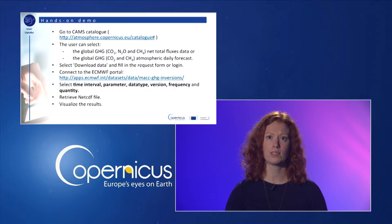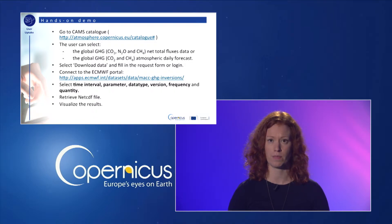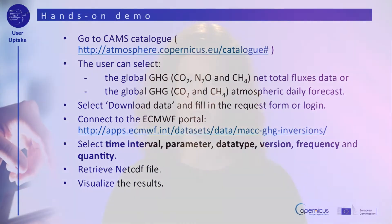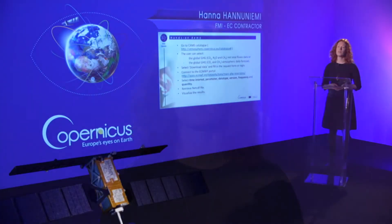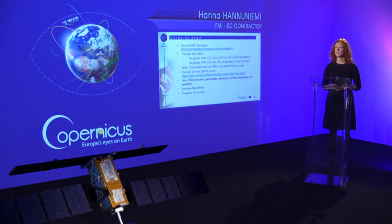A product description is provided for each version type. Then select frequency — the options are 3-hourly, daily average or monthly average. Finally, select the quantity type, which can be concentration or surface flux. Retrieve the NetCDF file and visualize the results.